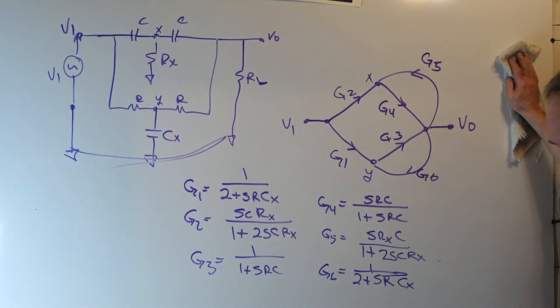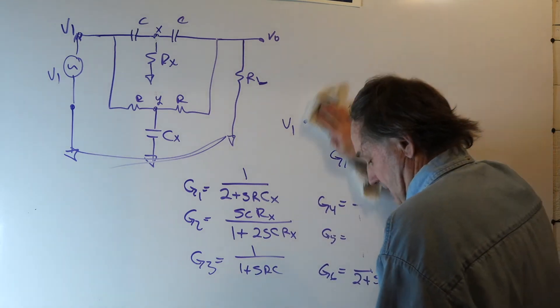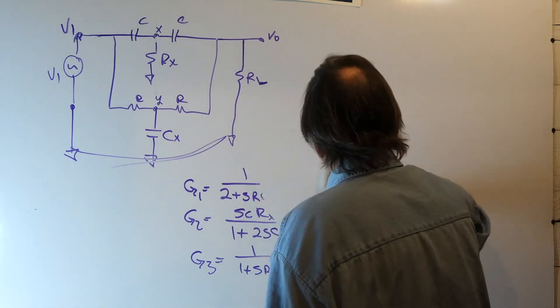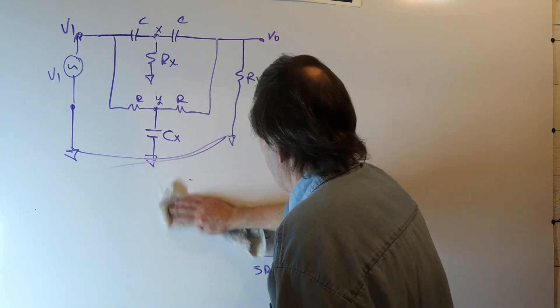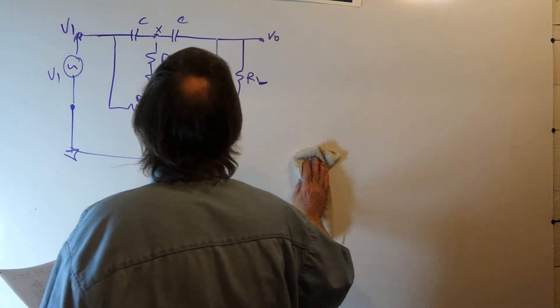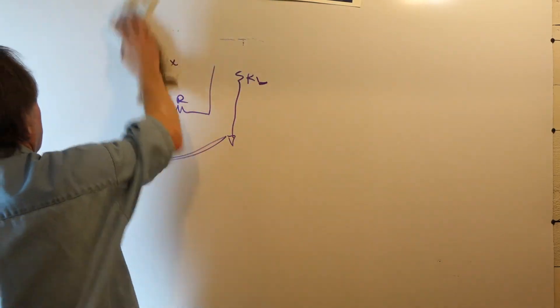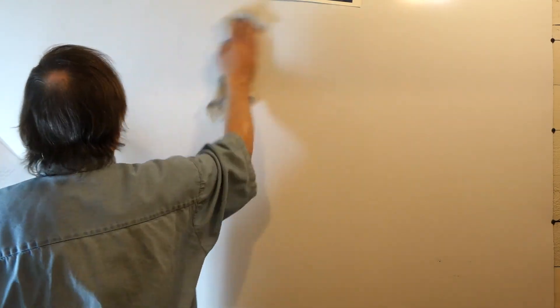Find the values for RX and CX that gives you a null at any particular frequency. I'll let you look at that and then I'm going to make a quick comment here regarding this network. There's an interesting circuit.